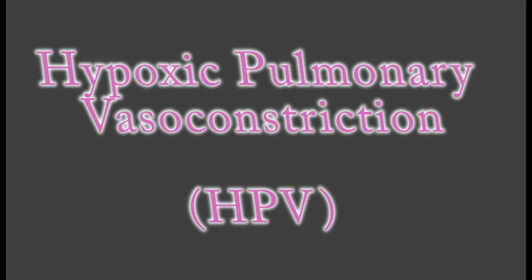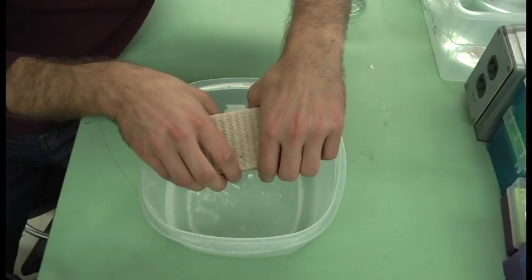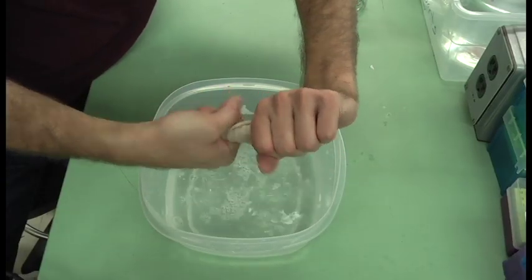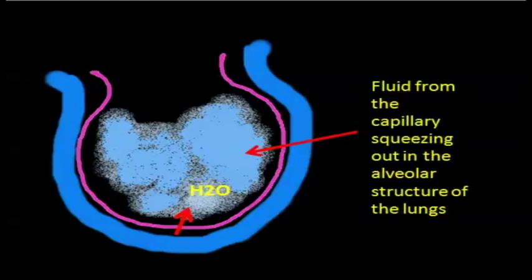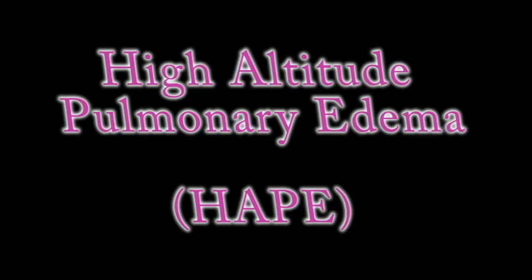This then causes the fluid inside those capillaries to ooze out like a sponge. And where does that fluid go? Well, the only place it can go, into your lungs. This is called high-altitude pulmonary edema.